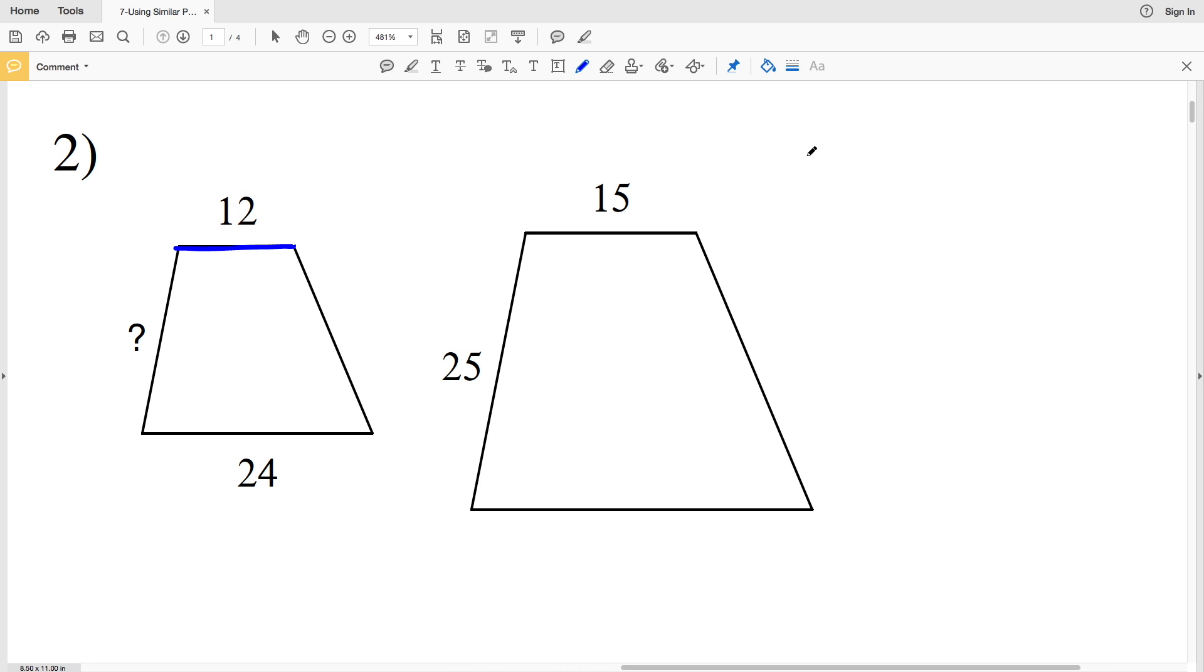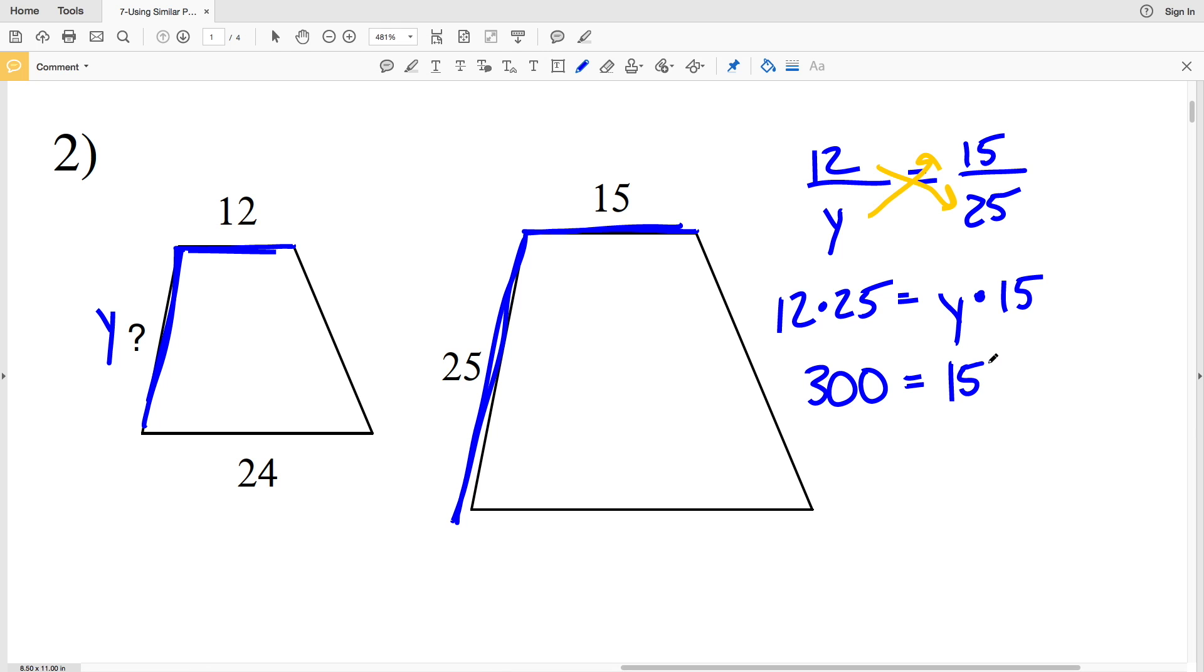In number two, the smaller base 12 over the missing side, call this Y, is equal to the proportion of the smaller base 15 over the side 25, since 12 corresponds to 15 and Y corresponds to 25. Now we'll cross multiply: 12 times 25 equals Y times 15. 12 times 25 equals 300, and 300 is equal to 15Y. When I divide by 15, I'll get that Y is equal to 20, so 20 is our missing side length for the trapezoid.